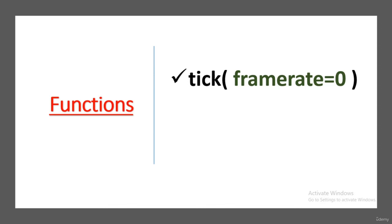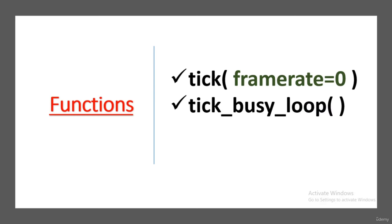Clock functions include: tick() — called once per frame, it calculates milliseconds passed since the previous call; if a frame rate is passed as argument, it delays to keep the game running at that tick rate. tick_busy_loop() works the same way — calling clock.tick_busy_loop(20) means the program never runs at more than 20 frames per second. get_time() retrieves the number of milliseconds that passed between the last two calls to clock.tick().